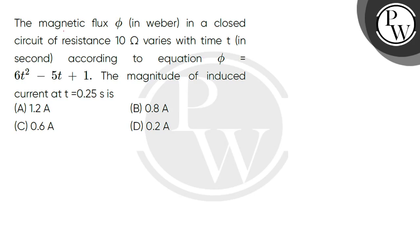Hello, let's read the question. The magnetic flux φ in weber in a closed circuit of resistance 10 Ω varies with time t in seconds. According to equation φ = 6t² - 5t + 1, the magnitude of induced current at t = 0.25 seconds is.